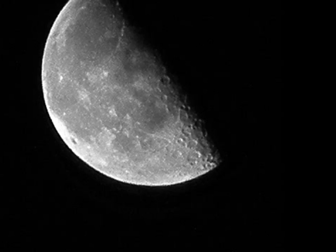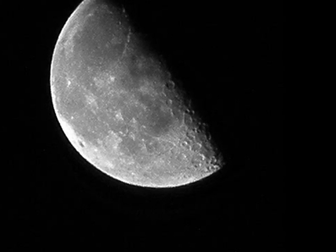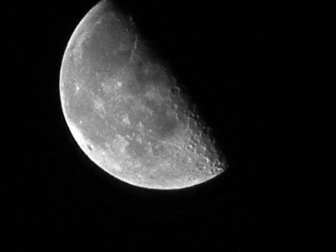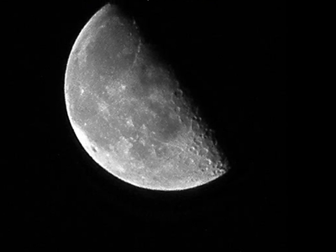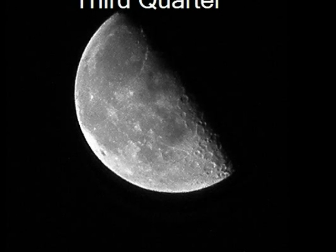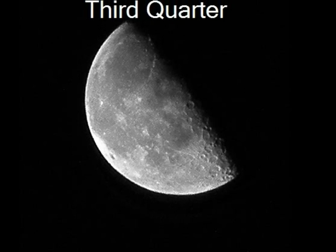We then see the third quarter, often called a half Moon, just like the first quarter. The only difference is that from the Earth, the other side of the Moon appears illuminated.